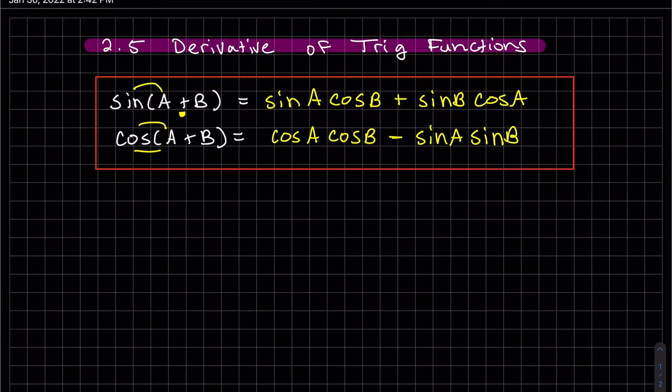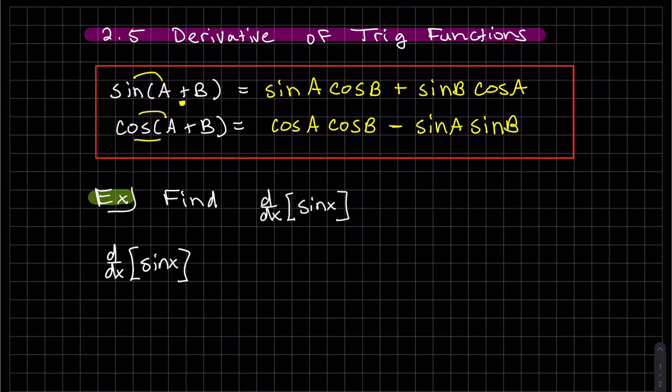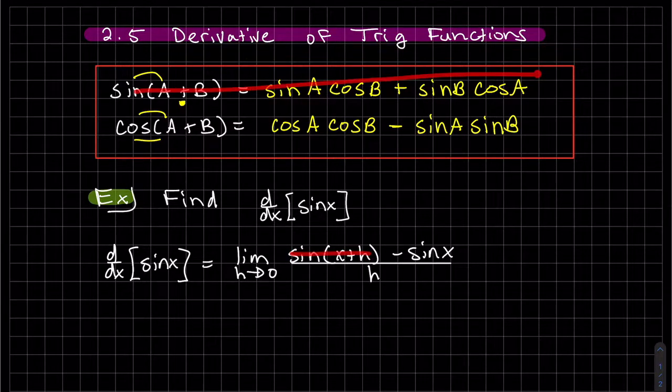We're going to start off with finding the derivative of sine of x. The only thing we have to use is the definition, just like we did in other sections when we were trying to find the power rule. Now you can see why I showed you those identities. This we need to rewrite. There's only one thing to do here, and it's use the identity I just showed you.